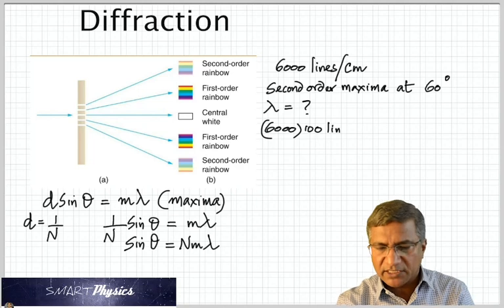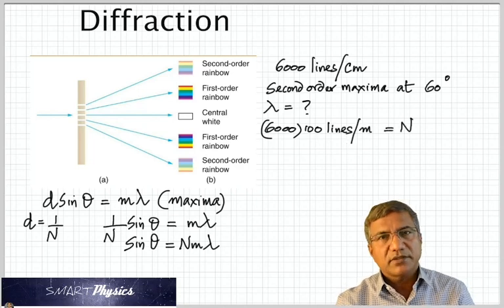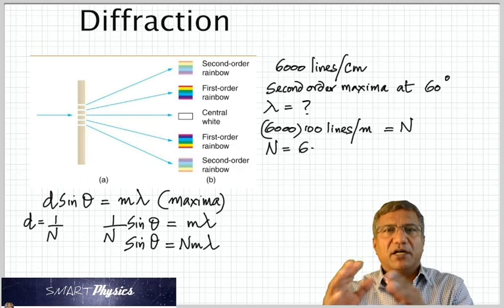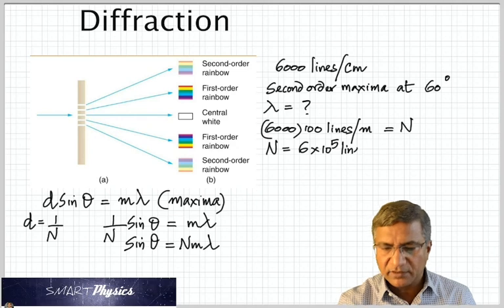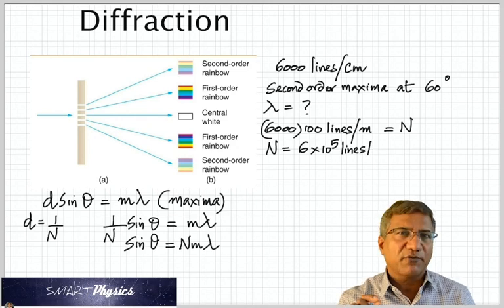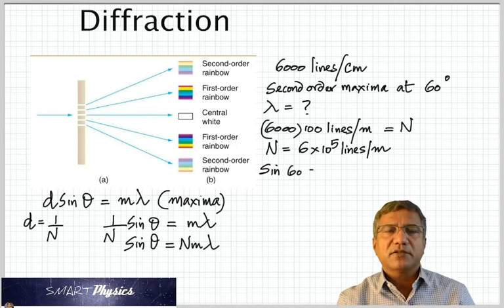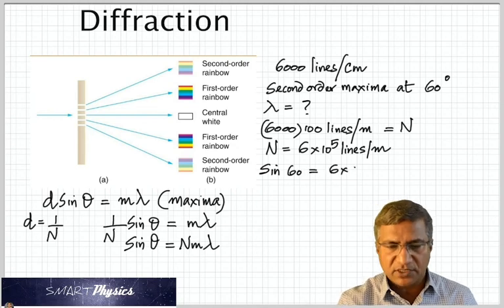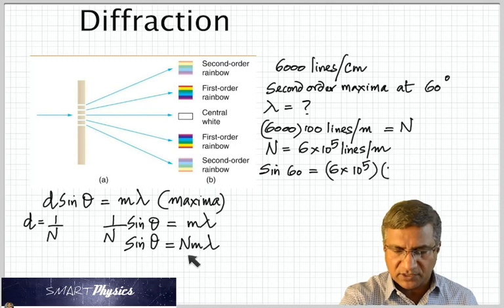So now plug it into this formula, sin 60, because it's sin theta, remember? Sin theta, which is sin 60, is N, which we got. M is 2, because it's given that it's the second order. We're looking for lambda. Rearrange that.